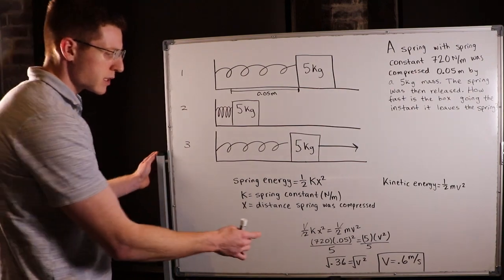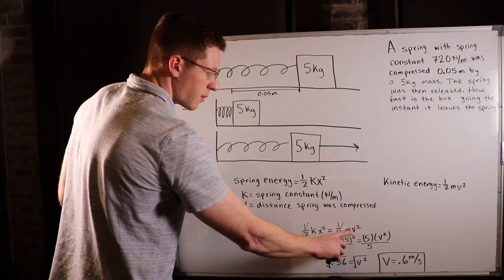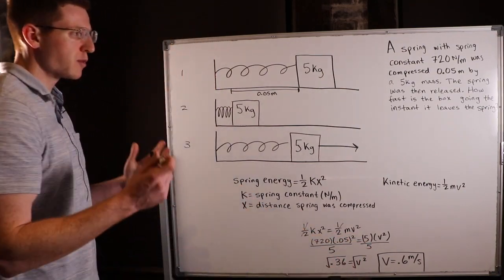I plugged in 720 for my k, 0.05 for my x, and then 5 for my mass, and I solved for my velocity.